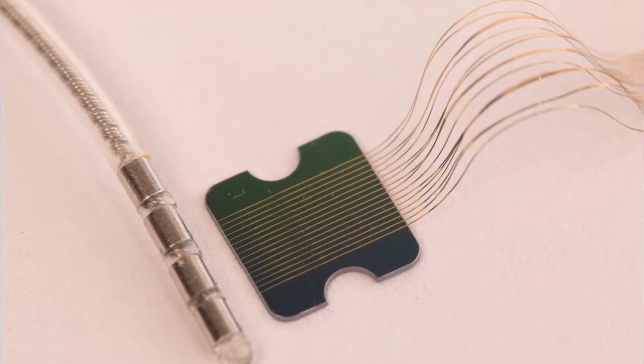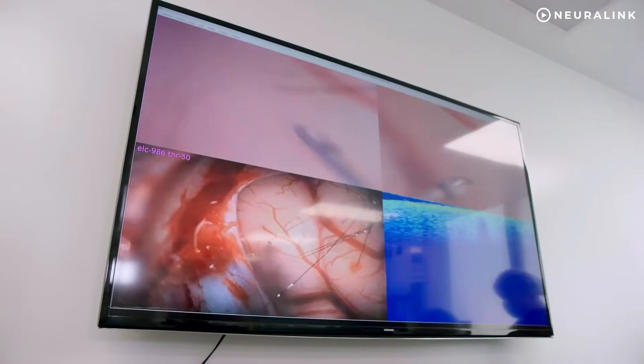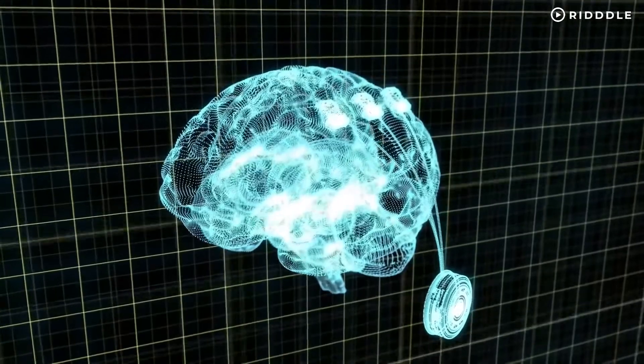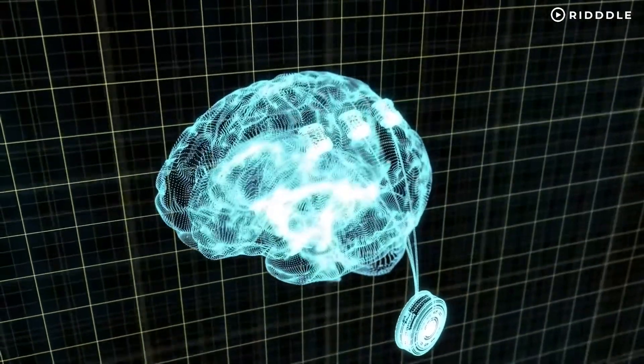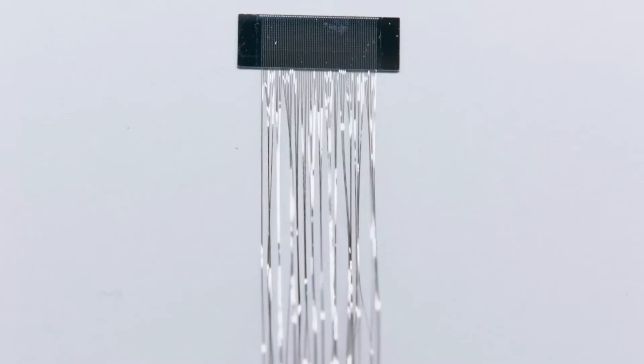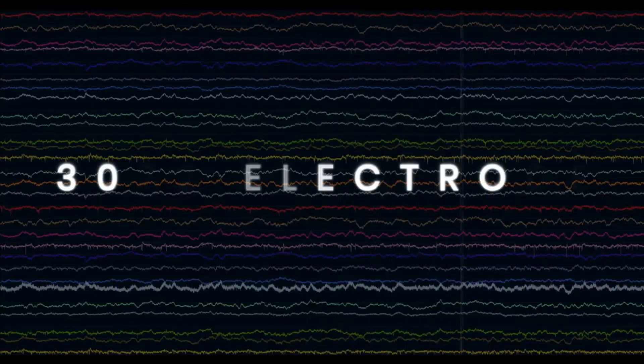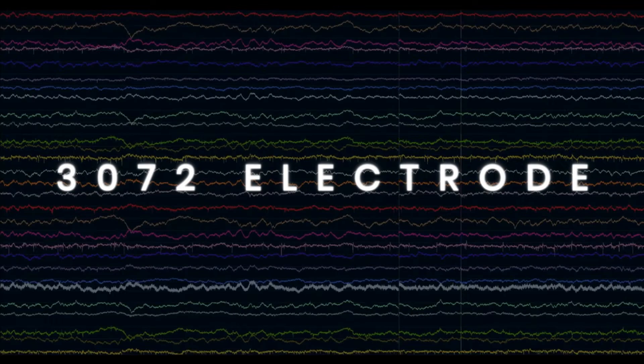Each probe consists of flexible wires that contain electrodes capable of locating electrical signals in the brain, and a sensory area where the wires interact with an electronic system that allows amplification and acquisition of the brain signal. Each probe contains 48 or 96 wires, each containing 32 independent electrodes, making a system of up to 3,072 electrodes per formation.